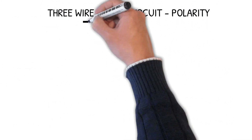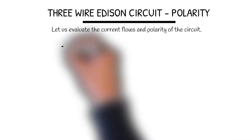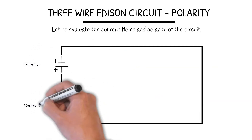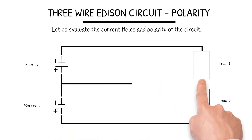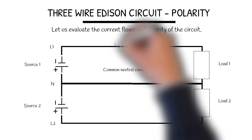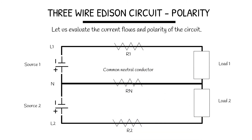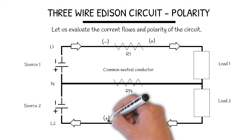3-Wire Edison Circuit Polarity. Let us evaluate the current flows and polarity of the circuit. Here we have the common neutral conductor. Because of electron flow, current leaves the negative terminal, which creates a negative and positive on the top resistor. On the bottom, current is going into the source, which gives a negative on one side and positive on the other.